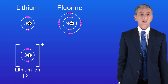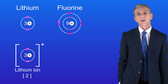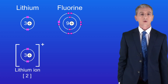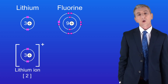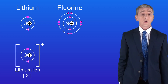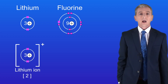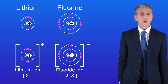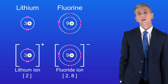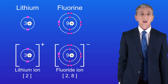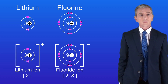Looking at the fluorine atom, we can see that we still have nine positive protons, but now we've got ten negative electrons. This means that we have one overall negative charge. We now call this the fluoride ion. Both the lithium ion and the fluoride ion now have a full outer energy level — in other words, the electronic structure of a noble gas.